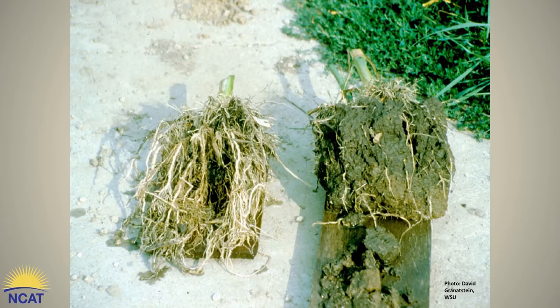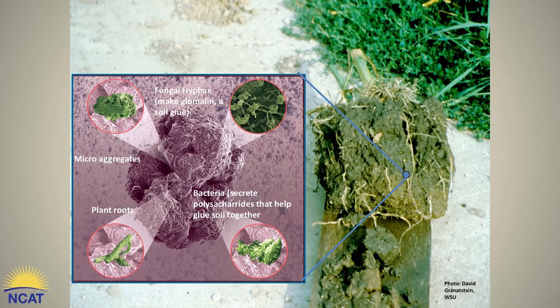David noted that the soil on the root ball on the left immediately washed away and nearly all the soil was gone after 30 seconds. The soil with the root ball on the right resisted washing away due to the presence of soil glues, which were present due to the farmer providing food in the form of manures and cover crops to the soil ecology.